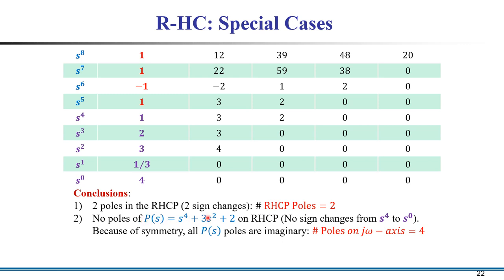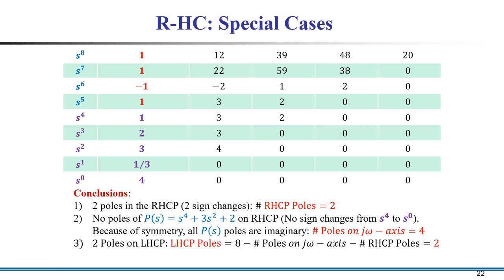Because of the symmetry of the even polynomial, all poles of s⁴ + 3s² + 2 are on the imaginary axis — so there are 4 poles on the imaginary axis. In summary: 2 poles in the right half s-plane, 4 poles on the imaginary axis, and 2 poles in the left half s-plane, giving a total of 8 poles.